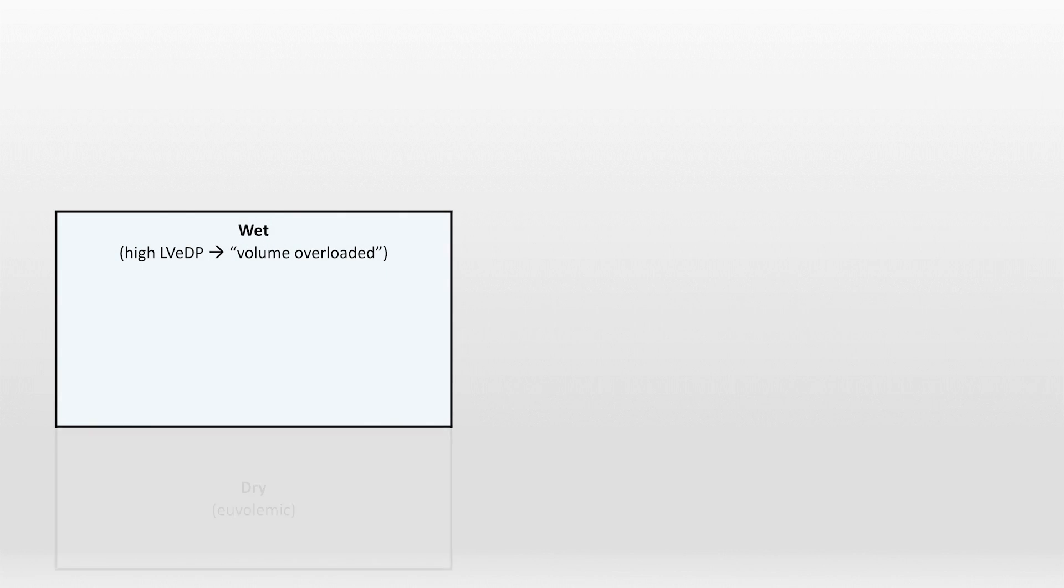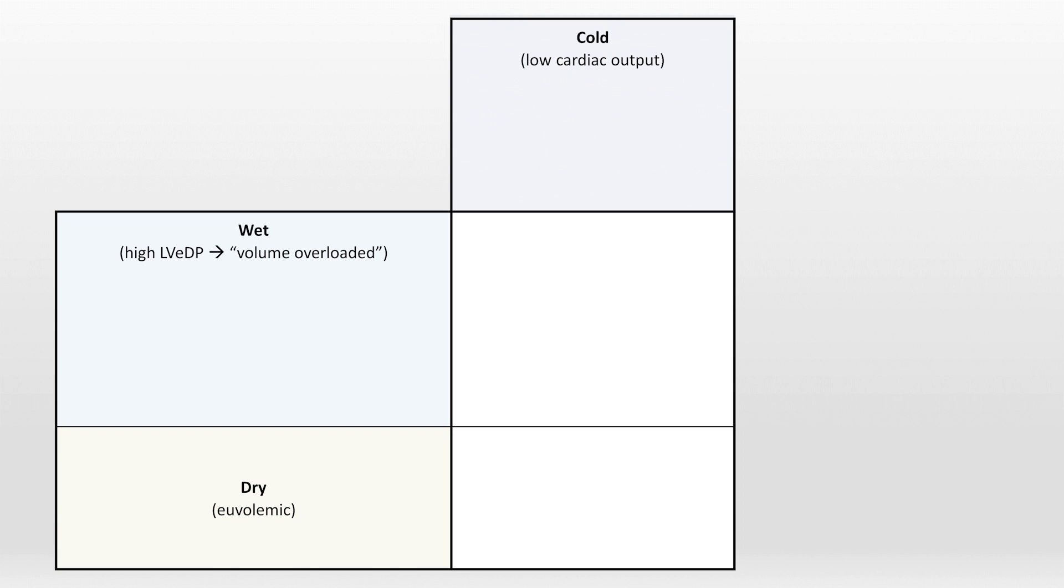While HFrEF versus HFpEF is the most common way to categorize chronic heart failure, a wonderful way to categorize acute exacerbations is according to the volume and temperature paradigm. In this model, patients' intravascular volume status is determined to be either wet, implying high left ventricular end-diastolic pressure, or dry, meaning euvolemic or theoretically dehydrated. And they are also described as either cold, meaning low cardiac output, or warm, meaning normal cardiac output. This model does not apply as well to isolated right-sided failure and doesn't apply at all to so-called high-output heart failure.